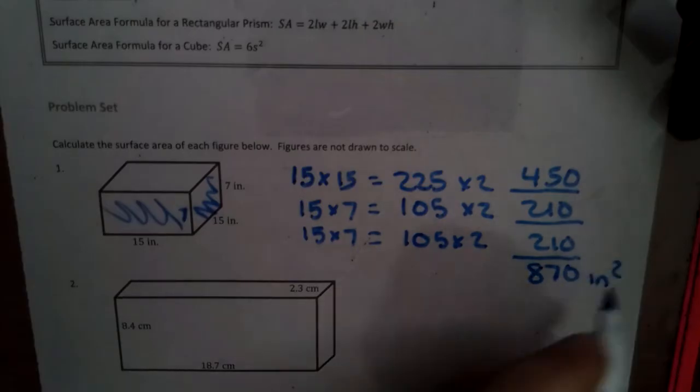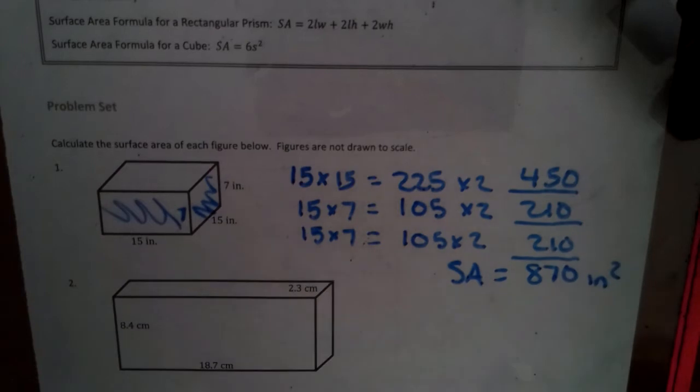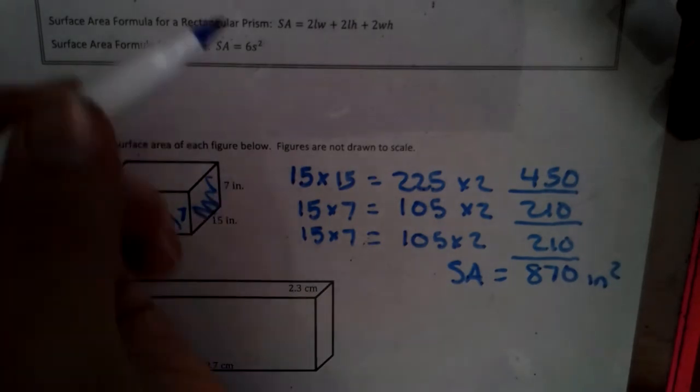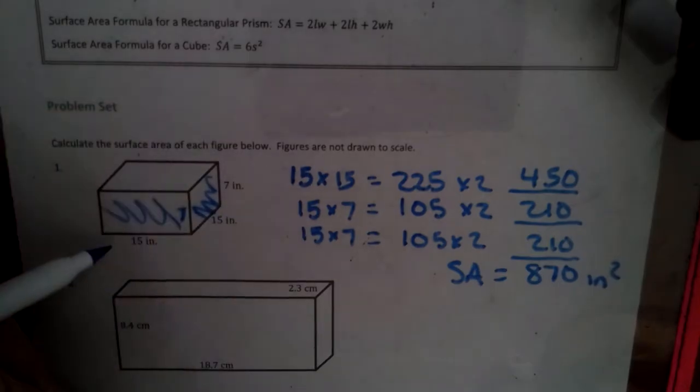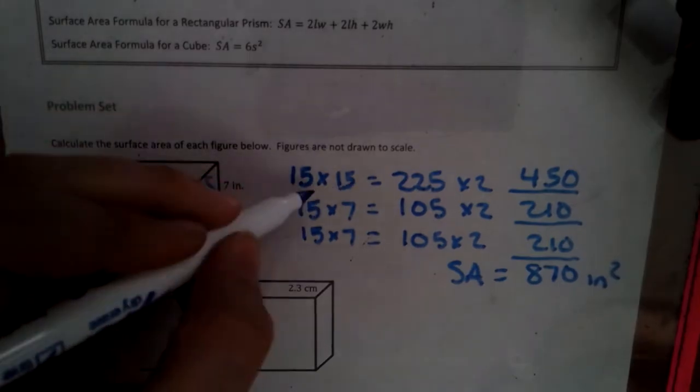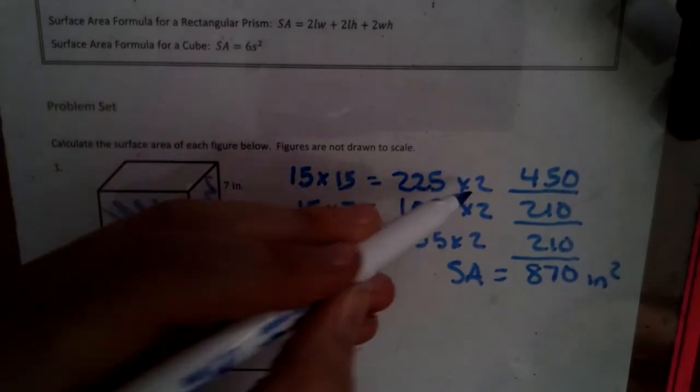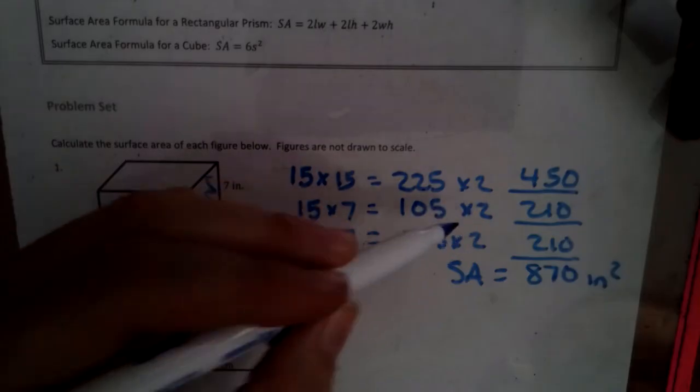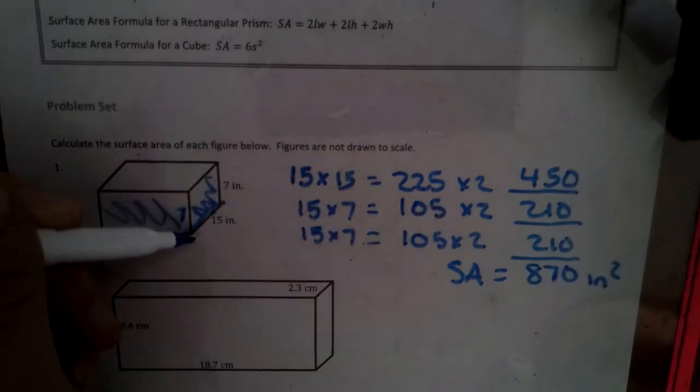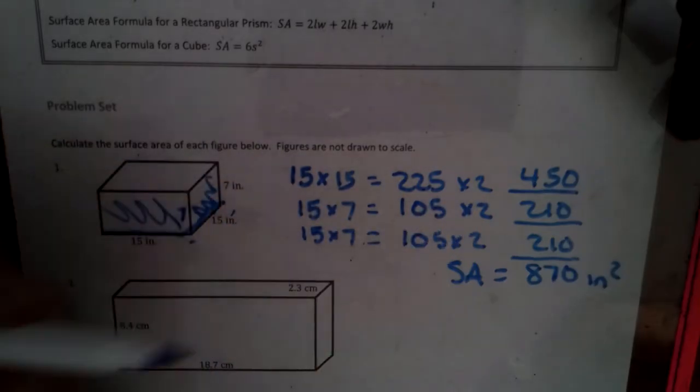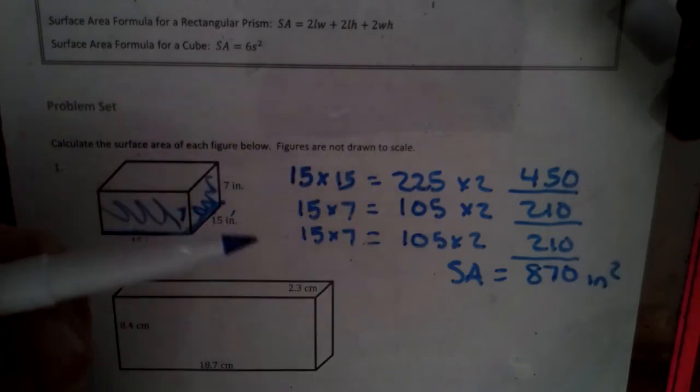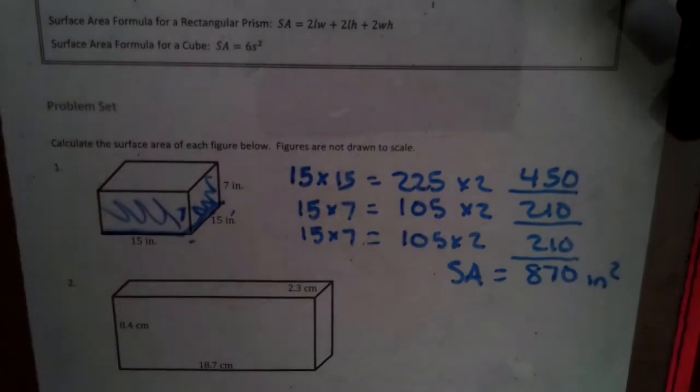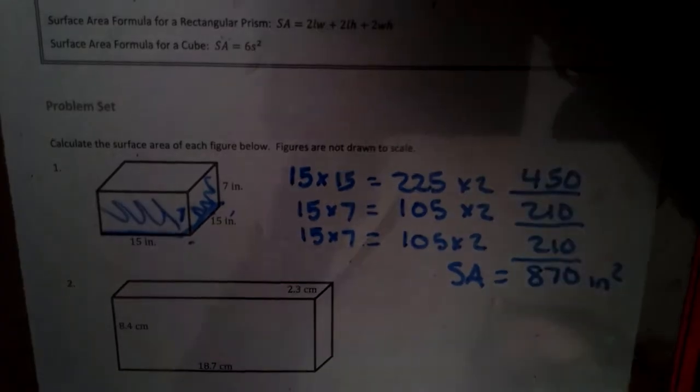870 inches squared equals the total surface area of that particular shape. So we truly did this formula. Two lengths times widths. Length times widths was this. So two of them. There we go. And then we have length heights, which is the front and the back, which is right there. And then we have the width heights, which are two of those. So we just did a shortened version of this long drawn out formula. Still works. All right. Moving along.